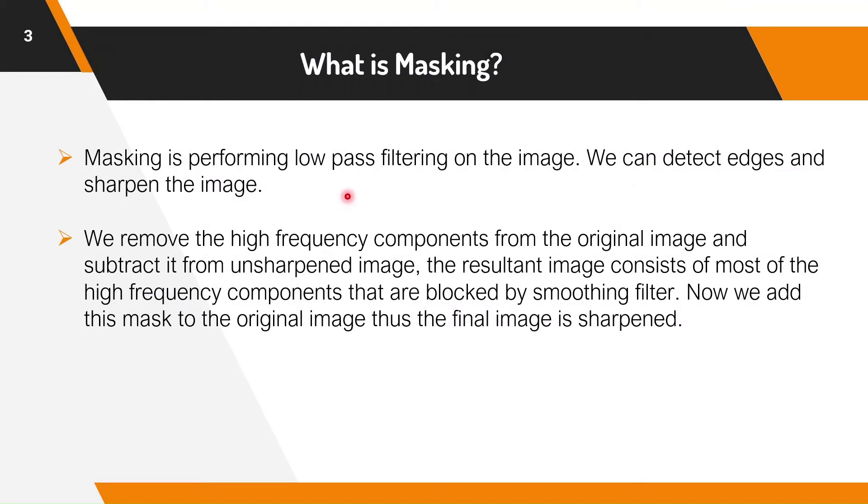Masking is performing low pass filtering on the image. We can detect edges and sharpen the image. We remove the high frequency components from the original image and subtract it from the unsharpened image. The resultant image consists of most of the high frequency components that are blocked by the smoothing filter. Now we add this mask to the original image. Thus the final image is sharpened.